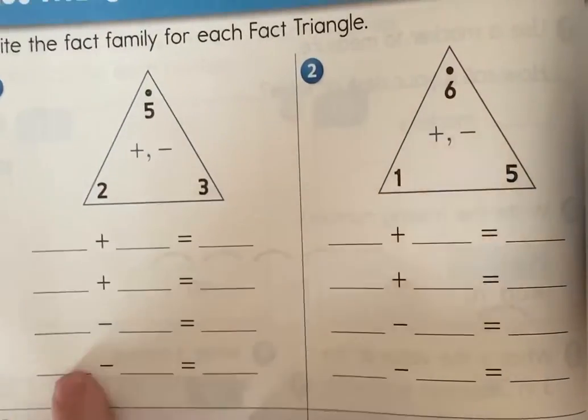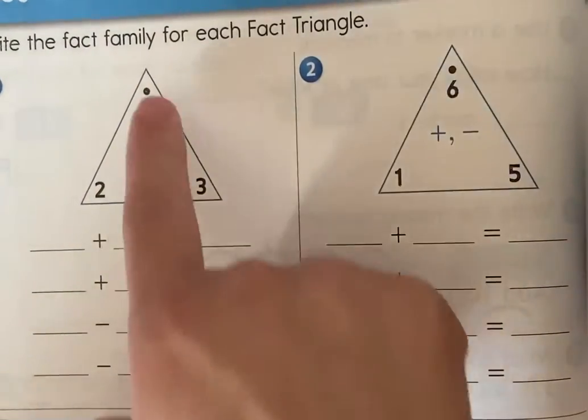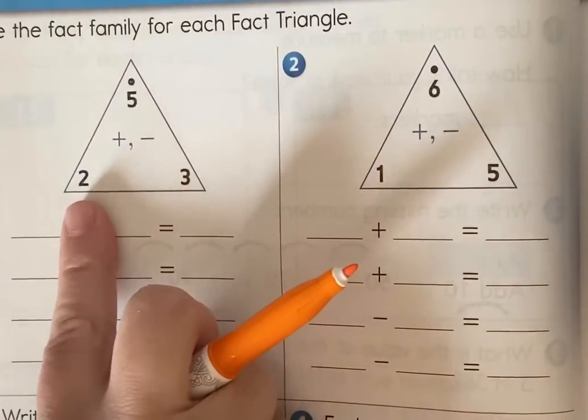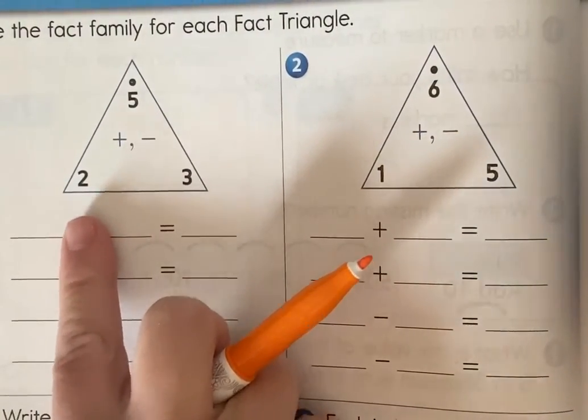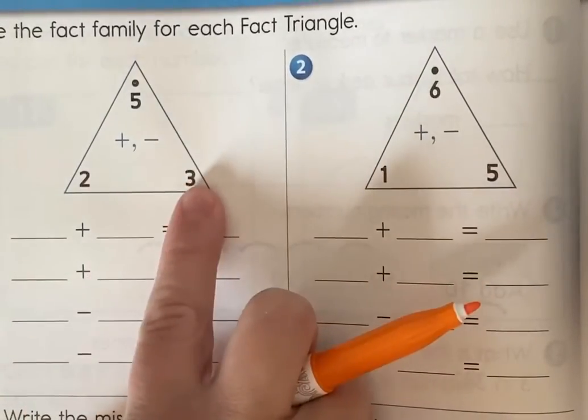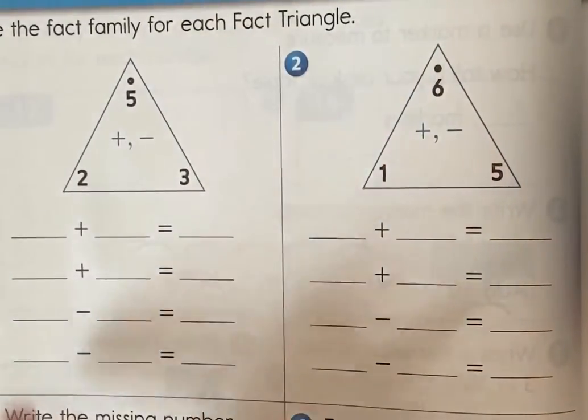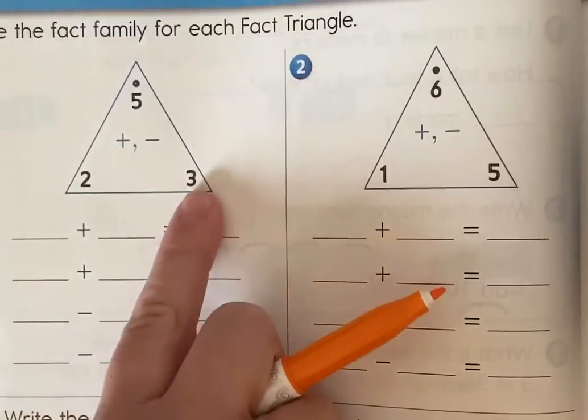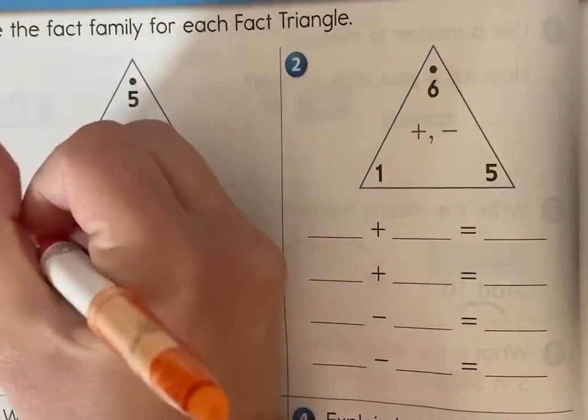I'm going to show you how we can fill in four number sentences for just that triangle. I always like to start with the smallest number and that out of all these numbers is two, and we can add the two bottom numbers together to make the top number. We don't actually have to think about any math when we have this kind of triangle because all the numbers are there for us. So two plus three is equal to five.